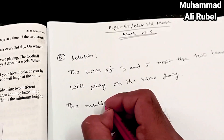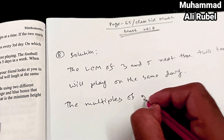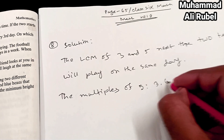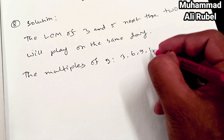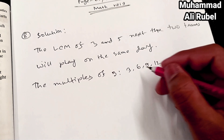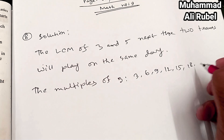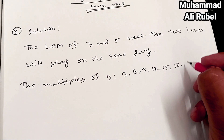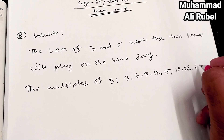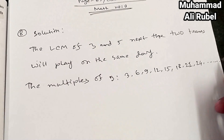The multiples of 3 are: 3, 6, 9, 12, 15, 18, 21, 24... and so on to infinity.